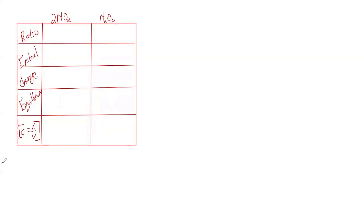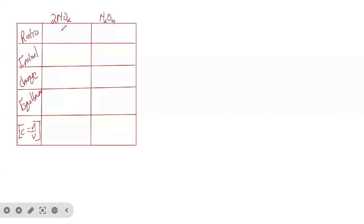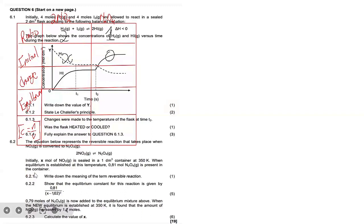For 6.2.2, we need to show that the equilibrium constant expression is given by the stated formula. We set up our ICE table. The ratio of coefficients is 2:1. Initially we have x moles of NO₂ and zero moles of N₂O₄. At equilibrium, the amount of N₂O₄ is 0.81 moles, so the change for N₂O₄ is +0.81.